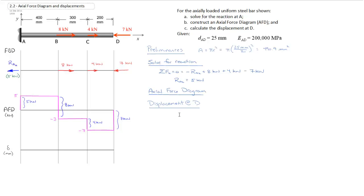So if we write that down, we know that our displacements at D would be equal to the displacements between A and D, because position A is fixed. That would be equal to the sum of the various displacements of the sections between A and D — specifically the displacement between A and B, plus the displacement between B and C, plus the displacement between C and D.